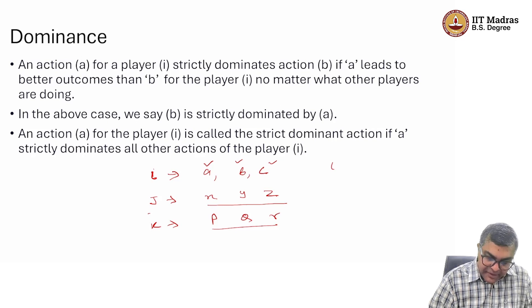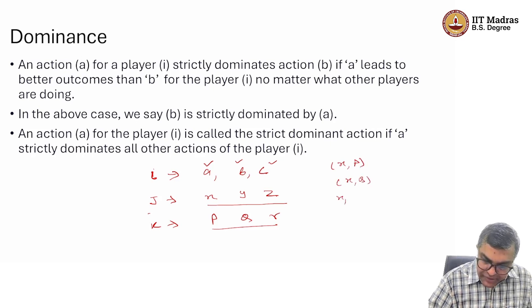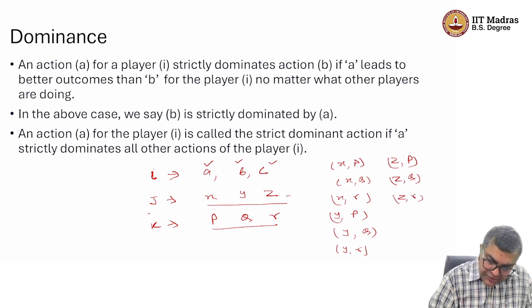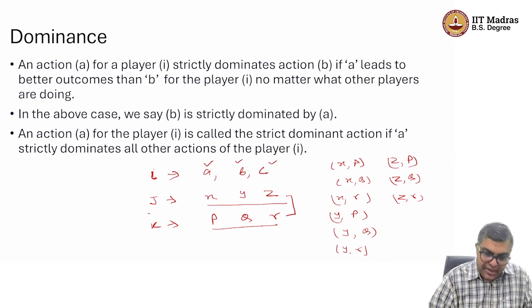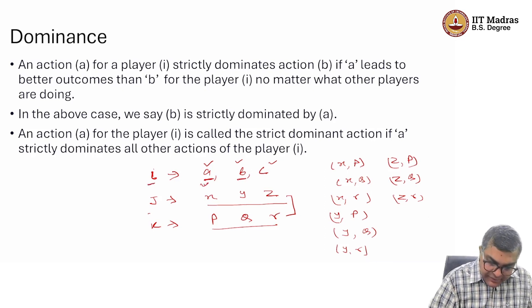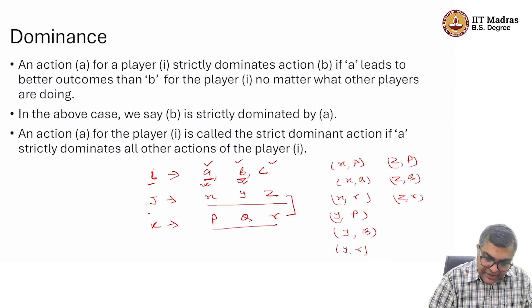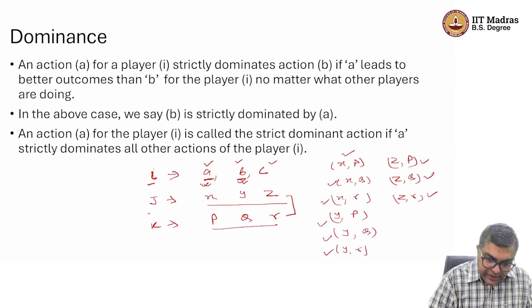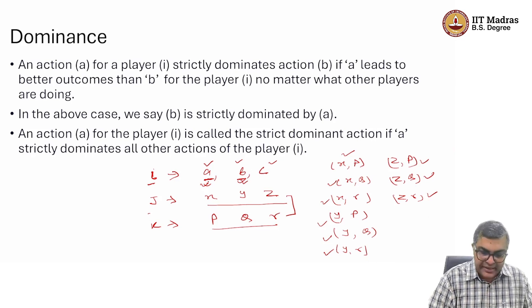From these two other players, there are nine combinations possible: (X,P), (X,Q), (X,R), (Y,P), (Y,Q), (Y,R), (Z,P), (Z,Q), (Z,R). What we are saying is that A strictly dominates B if for player I, A gives a better outcome than B no matter which of these nine combinations the other players are playing. It does not matter — A always gives more to player I.